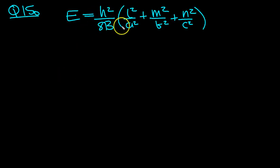E equals H squared over 8B times bracket L squared over A squared plus M squared over B squared plus N squared over C squared.